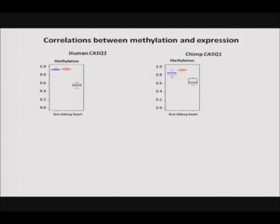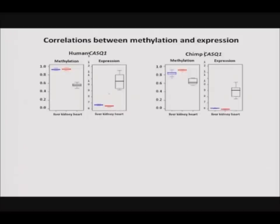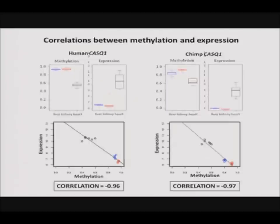TDMRs, as regions putatively functionally important in tissue differentiation, would be expected to show a negative correlation between methylation and expression. Plotting methylation and expression values for the heart-specific TDMR example CASQ1, we can indeed see a clear negative correlation. To visualize this better, I plotted methylation on the x-axis and expression on the y-axis in species-specific plots and obtained correlation values. I can then look at the distribution of these correlation values across all sites in the study to examine the genome-wide relationship between methylation and expression.